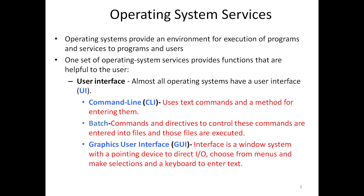The operating system provides an environment for the execution of application programs and services. It provides various services to programs as well as users. The three interfaces are: one is a command line interface, shortly called CLI; second is a batch interface; and third is a GUI, which stands for graphical user interface.